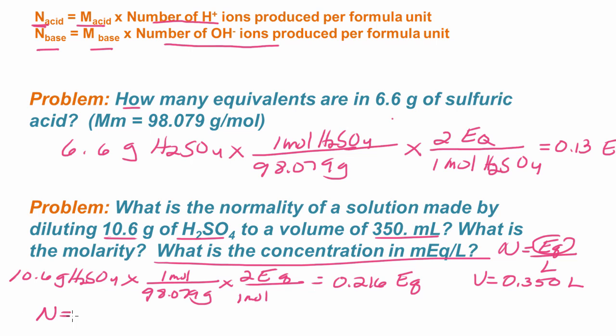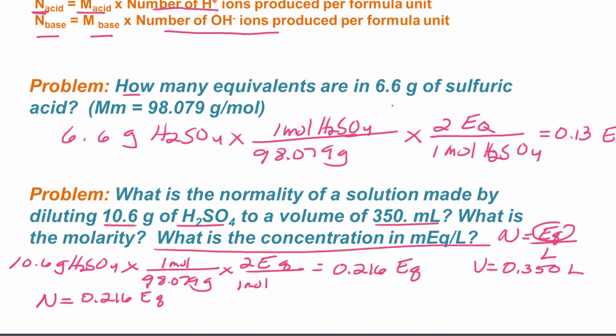And so now we can determine the normality. The normality is the number of equivalents, 0.216. And we will divide that by the volume. 0.350 liters is 0.618 normal. And then we're asked, what is the molarity?